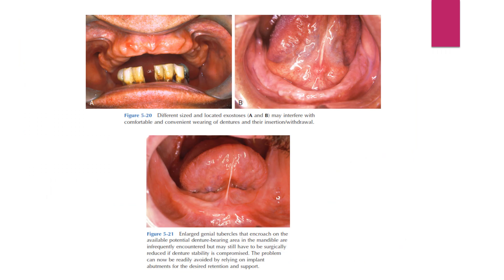Different-sized and located exostoses may interfere with comfortable wearing, insertion, or withdrawal of dentures. Enlarged genial tubercles may encroach on the available potential denture-bearing area in the mandible. These are infrequently encountered but may need to be surgically reduced if denture stability is compromised. The problem can also be avoided by relying on implant abutments for desired retention and support.